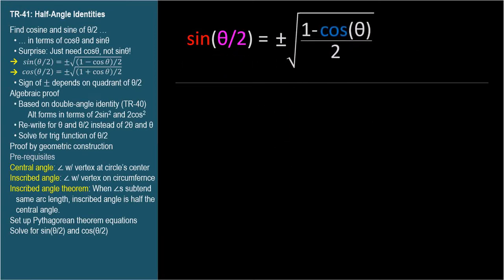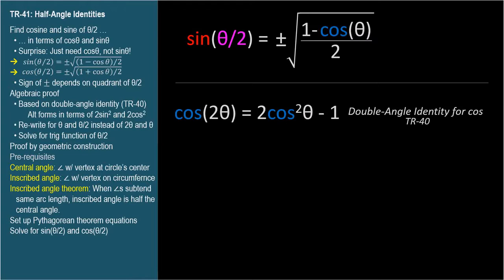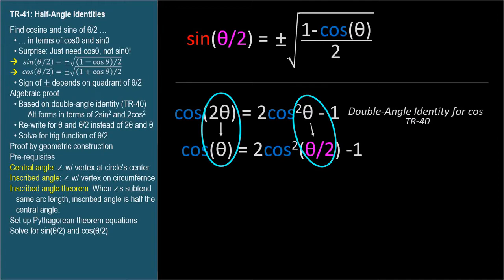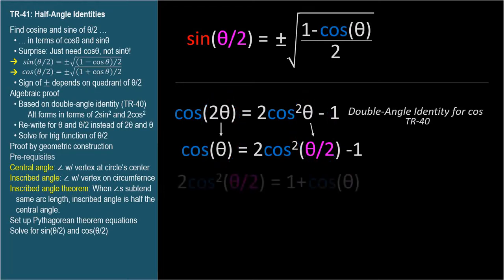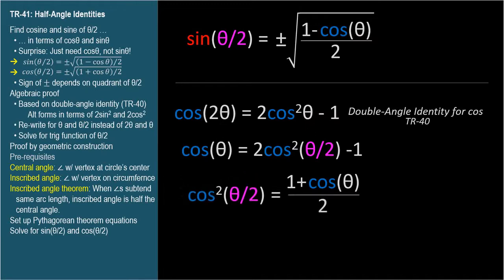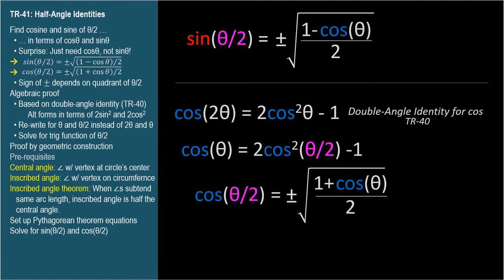To find the identity for cosine theta over 2, we start with the double angle identity for cosine 2 theta in terms of cosine theta: cosine 2 theta equals 2 cosine squared theta minus 1. Dividing the angles in half: cosine theta equals 2 cosine squared theta over 2 minus 1. Rearranging gives 2 cosine squared theta over 2 equals 1 plus cosine theta. Dividing by 2 and taking the square root: cosine theta over 2 equals plus or minus the square root of 1 plus cosine theta over 2. Again, the plus or minus sign depends on the quadrant in which theta over 2 lies.